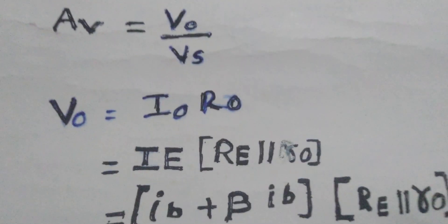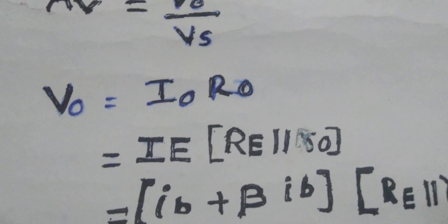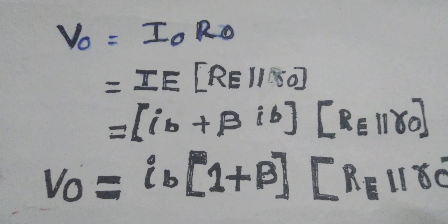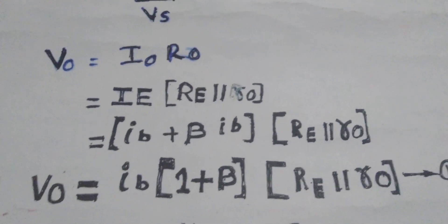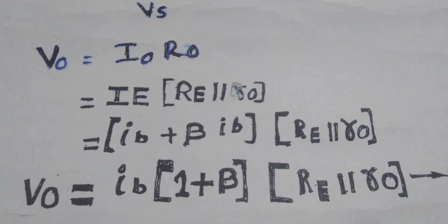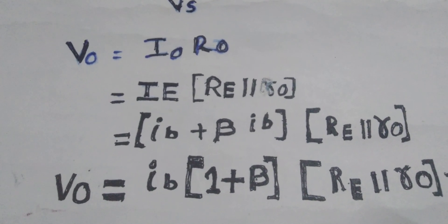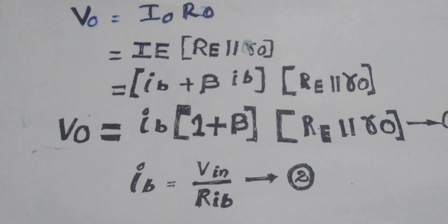The current flowing through the output resistor is IE, which equals IB + β·IB. So substituting, V0 = IB(1 + β) × (RE ∥ r0). Here, (1+β), RE, and r0 are all constants; the only variable is IB. So we need to find IB and substitute it into the expression for V0.